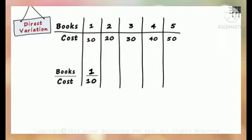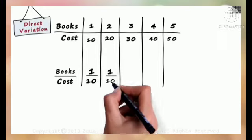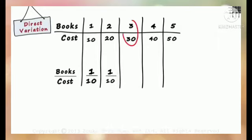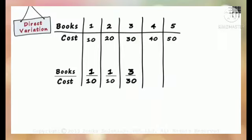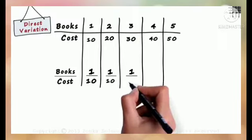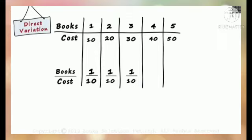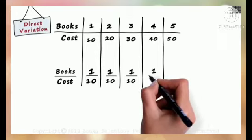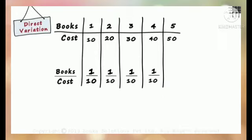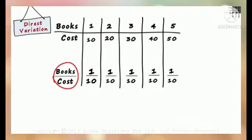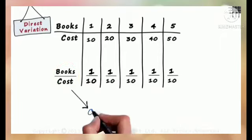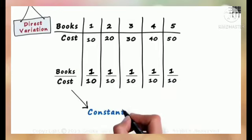The ratio 2/20 can be written as 1/10. In the third case, the ratio is 3/30, which again reduces to 1/10. And similarly, in all cases, the ratio will be 1/10. The ratio of the number of books to the cost remains constant — it is always equal to 1/10.